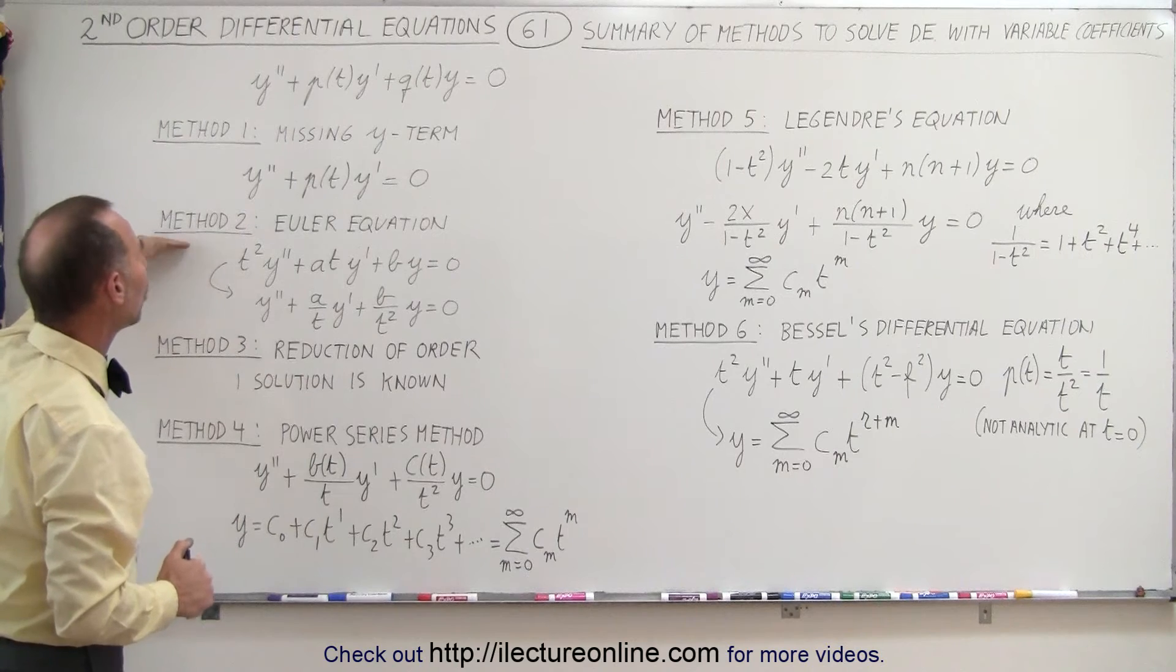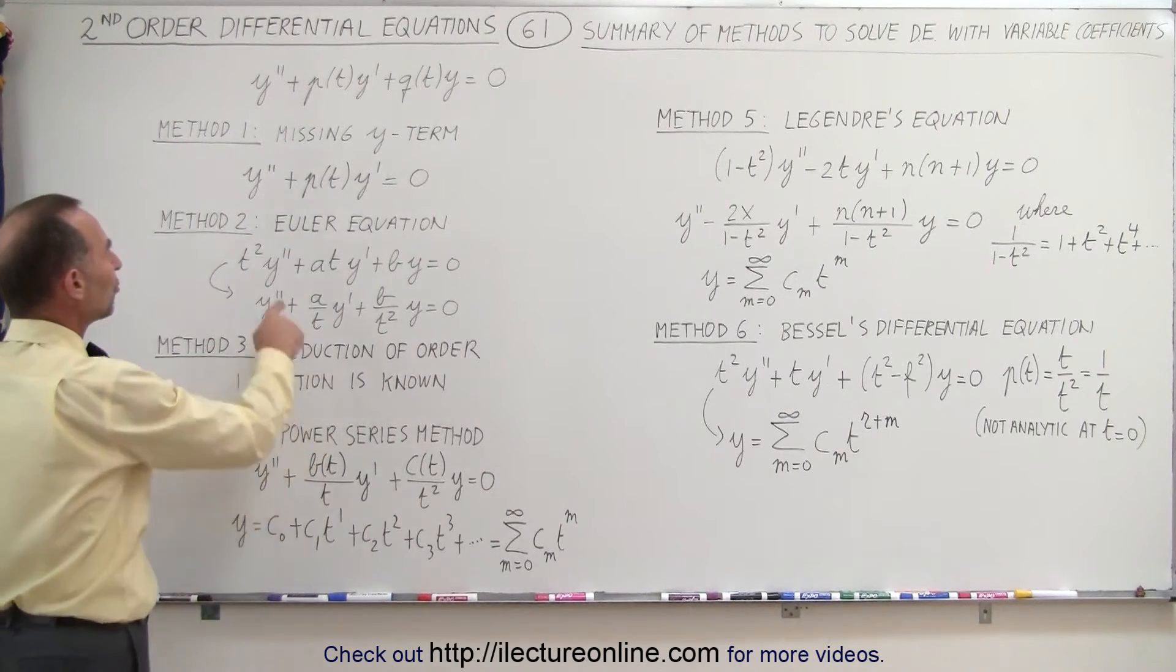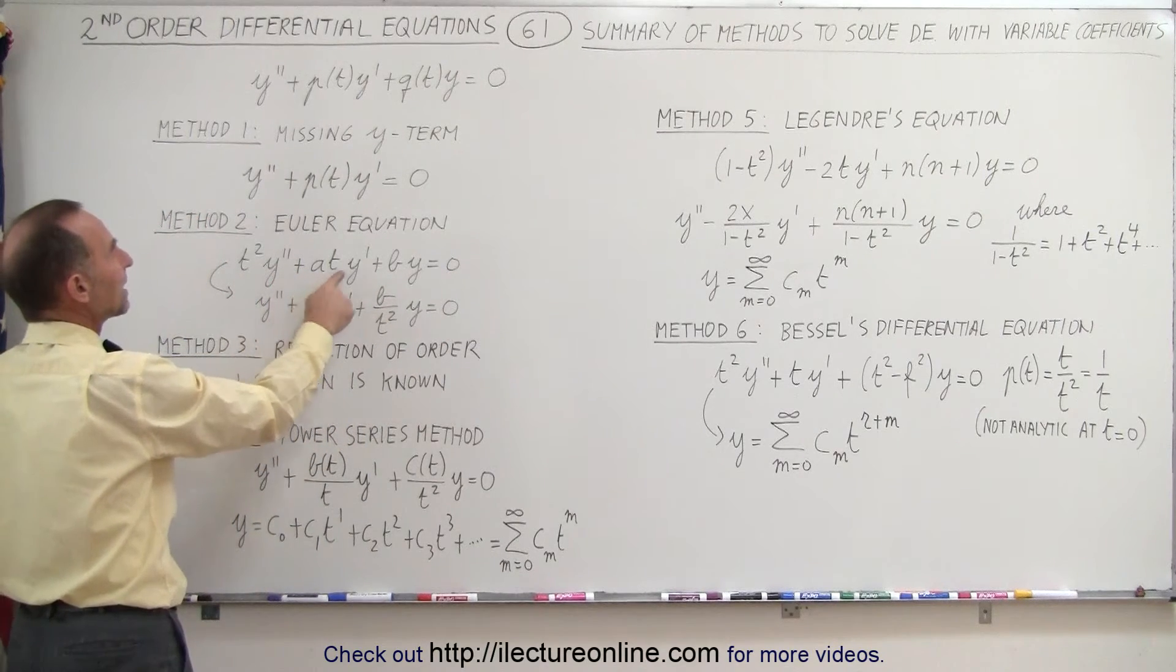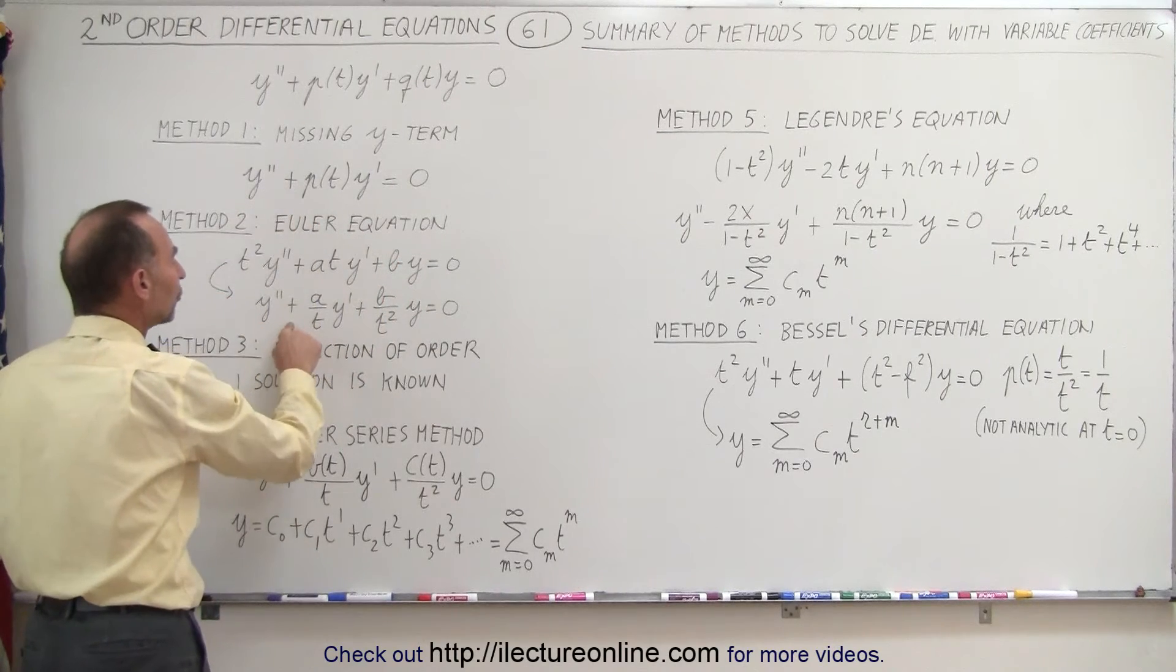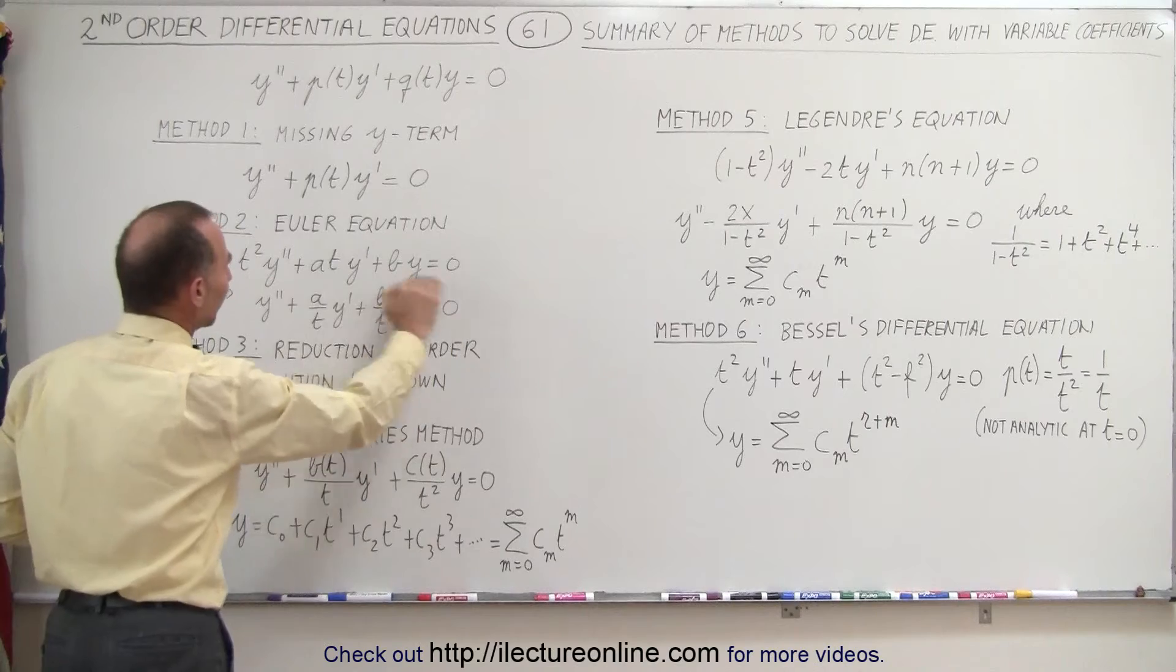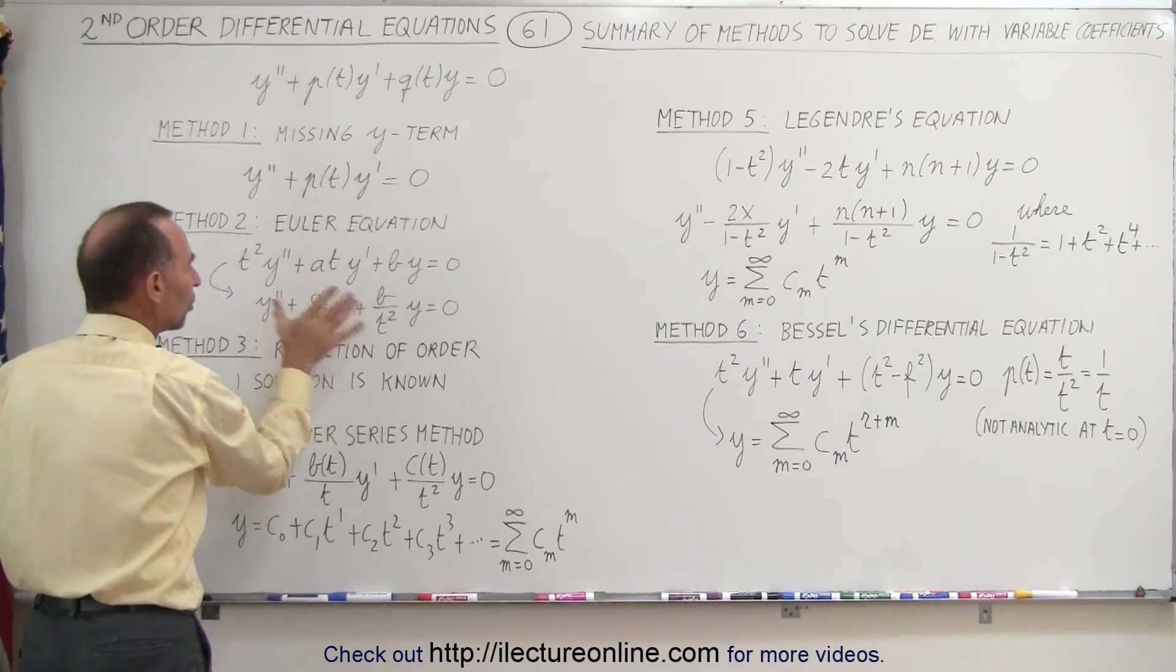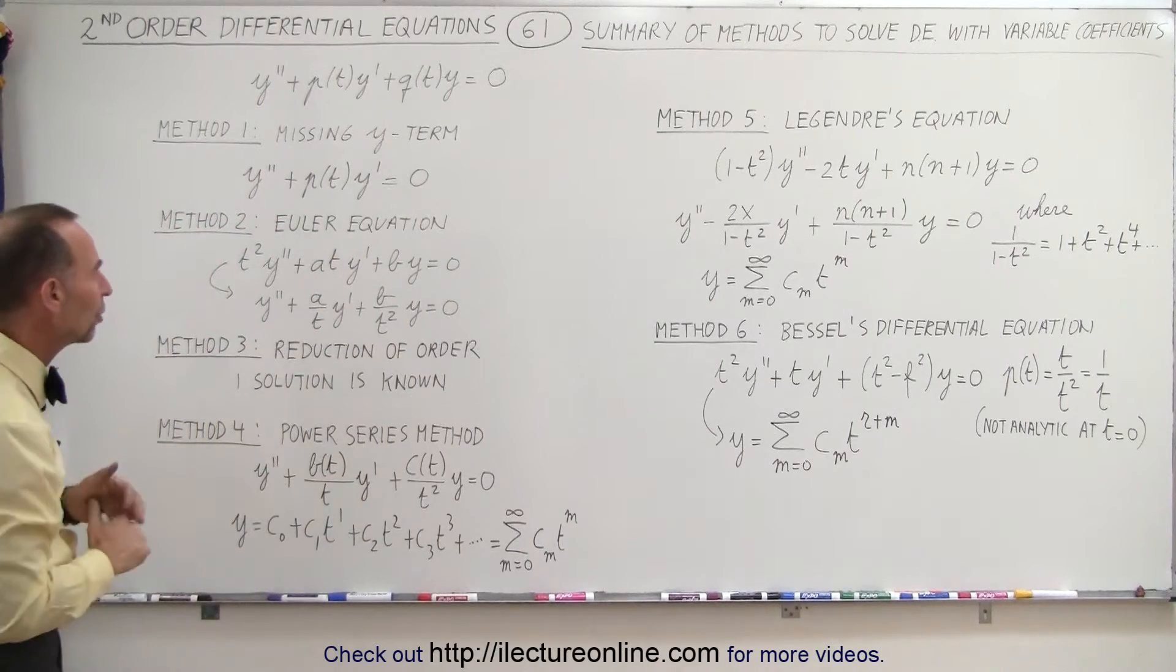Then there's method two called the Euler equation. Now that's if we have an equation in this general format, t squared times y double prime plus at times y prime plus by, and then we set it into the standard format by dividing both sides by t squared, the equation will look like this. If the equation looks like this, we'll use what we call the Euler equation method to solve that differential equation.